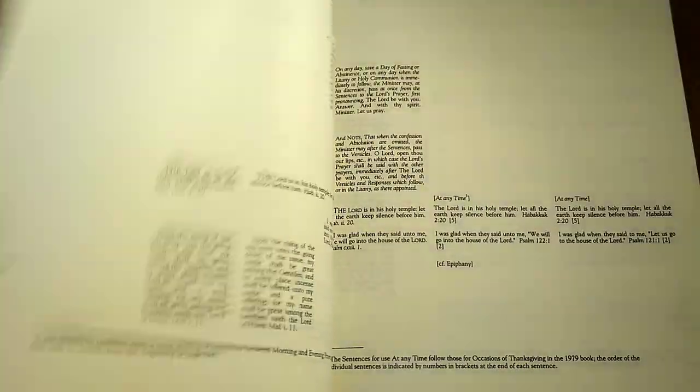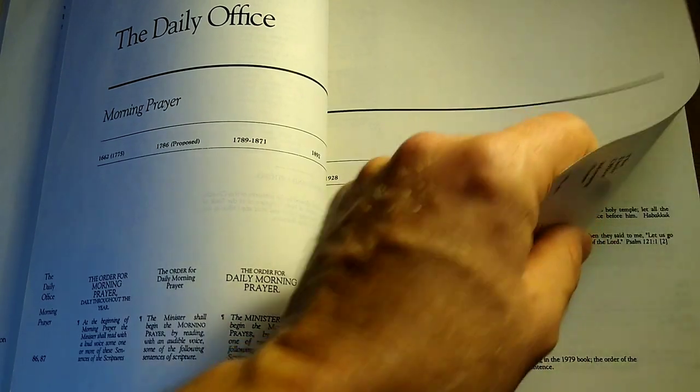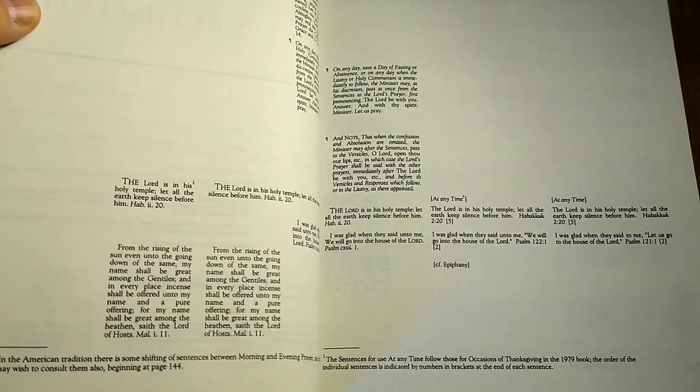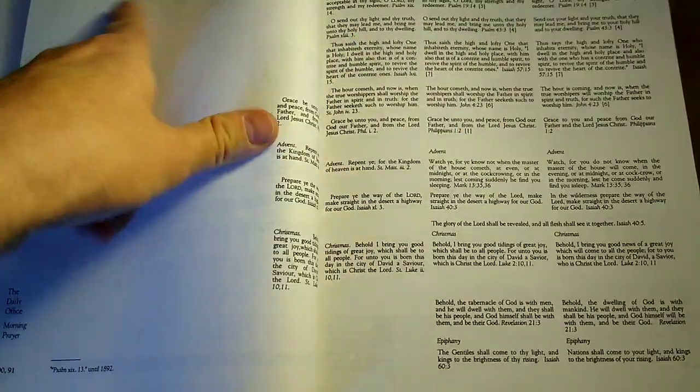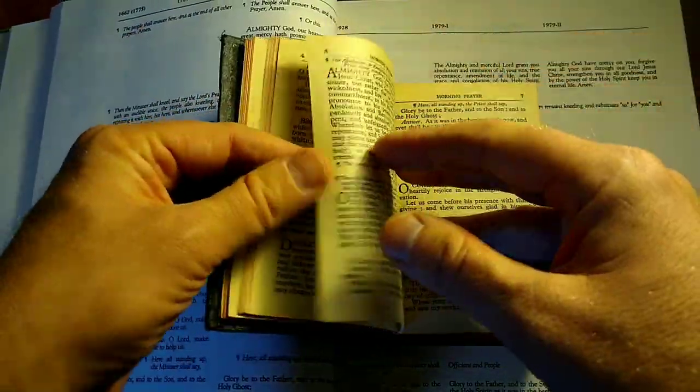You notice here, just as an aside, in this parallel, the earlier prayer books are on the left, later prayer books on the right, with 1979 taking up two columns because of two different rites. But the sentences to be read before morning prayer are few here on the left and many and differing on the right, and not many held in common. Where there's blank space here, there's sentences or verses. So very little overlap between the earlier 1662 and earlier American prayer books and later revisions.